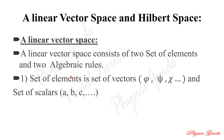Algebraic rules mean the phenomena of addition rules and multiplication rules, along with their properties — for example, commutative addition, commutative scalar quantities, and associative properties. All these concepts are used in quantum mechanics. A linear vector space consists of two sets of elements and two algebraic rules.